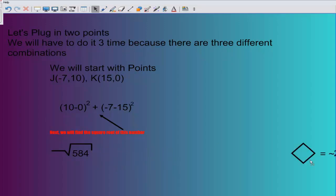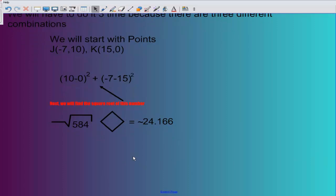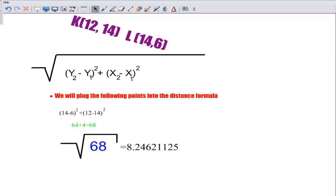We'll find the square root of that number and we get the square root of 584, which is equal to 24.166. So we found the distance of one line.